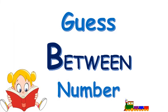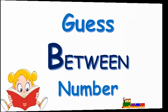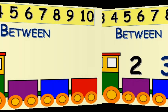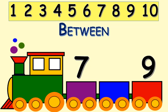Now I'll be giving you two numbers and you have to find which number comes in between. Let's start the guessing game! Here we have two numbers, two and four — you have to find which number comes in between two and four. Here we have two numbers, seven and nine — you have to find which number comes in between seven and nine.